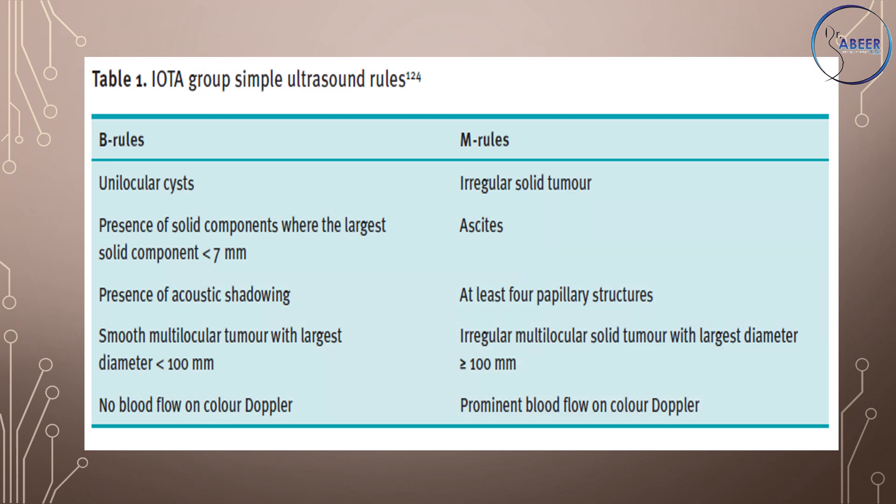Table 1: IOTA Group Simple Ultrasound Rules. B rules: unilocular cyst; presence of solid components where the largest solid component is less than 7 mm; presence of acoustic shadowing; smooth multilocular tumor with largest diameter less than 100 mm; and no blood flow on color Doppler. M rules: irregular solid tumor; ascites; at least four papillary structures; irregular multilocular solid tumor with largest diameter greater than or equal to 100 mm; and prominent blood flow on color Doppler.